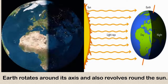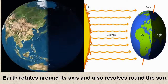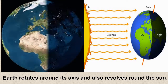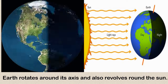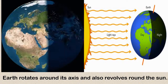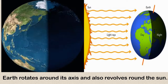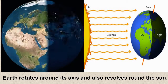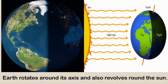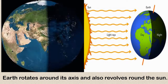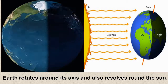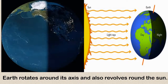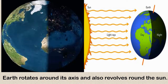Our Earth rotates around its own axis at a certain speed. Similarly, it also revolves around the sun. The sun has its own light, and when the Earth revolves around the sun, we receive light from the sun. However, we see light only in the daytime; nights are dark. Let us see how this happens.